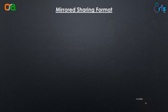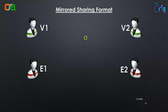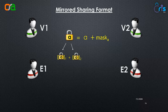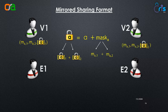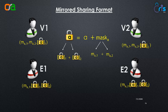We'll start with our mirrored sharing format. Let's say we have a value A and we want to create shares of A. We first add a random value which we call the mask of A, and we call this summation the lock of A. We then break the lock into two parts such that when added they give back the lock of A. We also break the mask into two parts. Now we have four parts for this equation. From these four parts, we give three parts to each party. V1 and V2 both have both parts of the mask but only one part of the lock. Similarly, E1 and E2 have both parts of the lock but only one part of the mask.